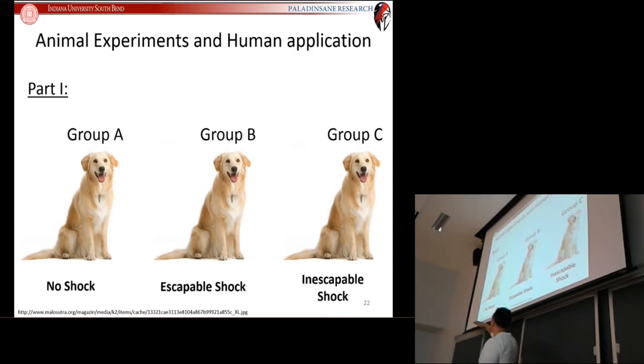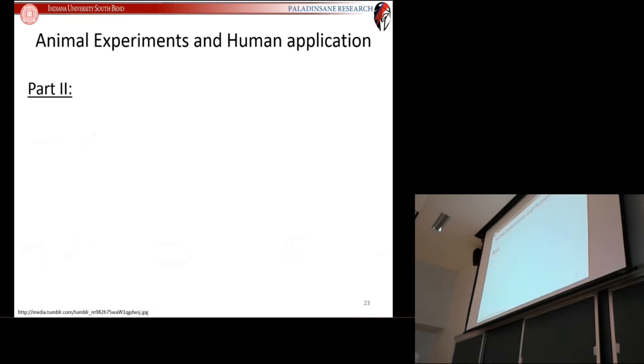What eventually happened: the dogs in the no shock condition just sat in that room wondering what's going on. The dogs in escapable shock condition learned that pressing that panel would turn off their shock. The inescapable shock group didn't learn that because there was nothing to learn, their panel did nothing. That was part one. No shock, escapable shock, inescapable shock, and importantly, the exact same amount of shock between those two groups.